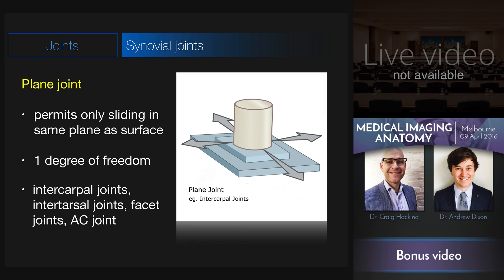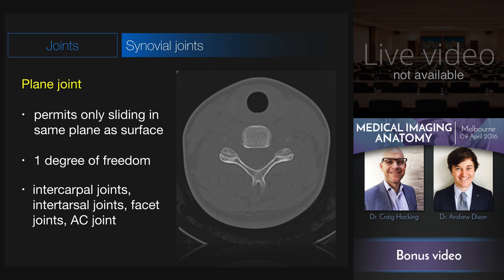The final type is the plane joint, which allows only one degree of freedom — a gliding or sliding movement in the same plane as the articular surface. Examples include the intercarpal joints in the wrist, intertarsal joints in the foot, the facet joints in the spine, and the AC joint. Here is an example with the facet joint: two surfaces completely parallel to each other, allowing simply a gliding movement in that plane.